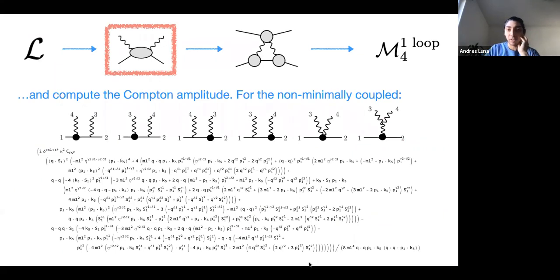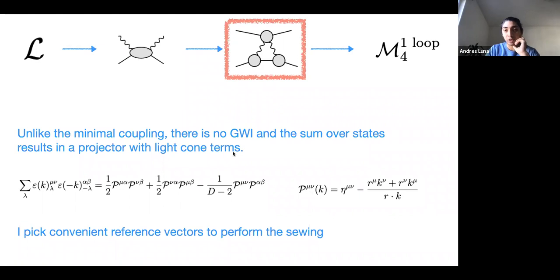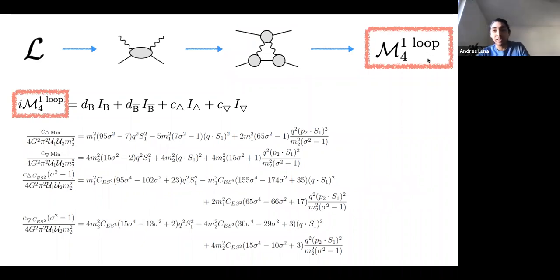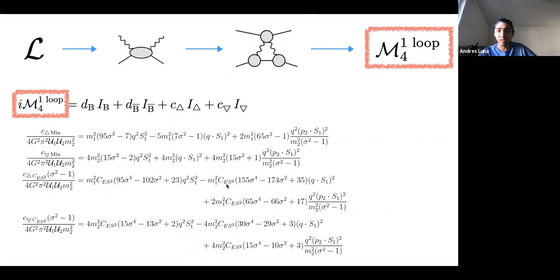There is nothing remarkable about the Compton amplitude — it's not beautiful but not terrible, just an ingredient. We then go and compute three-particle cuts from which we can compute the one-loop amplitudes. Here we don't have the very nice generalized Ward identity form, so the sum over states contains non-physical terms. It doesn't matter — we can pick convenient reference vectors and it's not terrible. We get the terms contributing classically to the one-loop amplitudes, specifically the triangle coefficients with the Wilson coefficient for the spin-induced quadrupole.